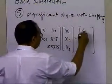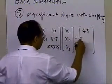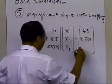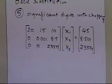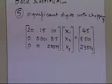The right-hand side vector which we obtained was 45, 8.501, and 23374. So now we need to find out what x1, x2, x3 is by using the back substitution step.